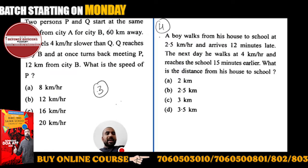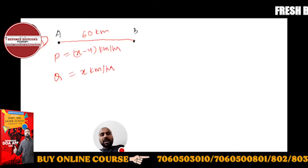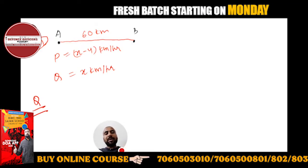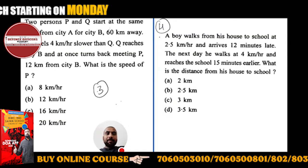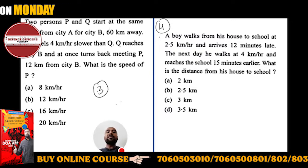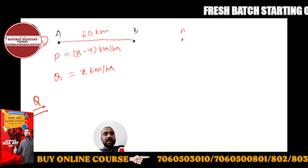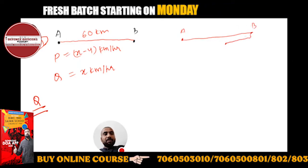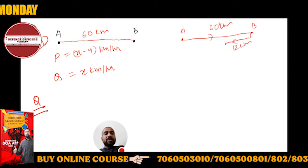Q reaches city B and then turns back, meeting P 12 km from city B. You have to understand how Q is traveling. Q reached point B from point A, meaning it traveled 60 km. Then it went back 12 km from city B.